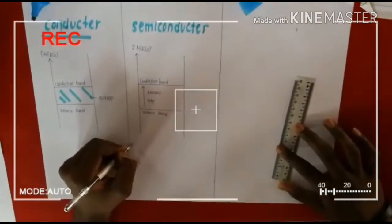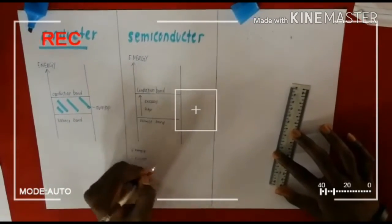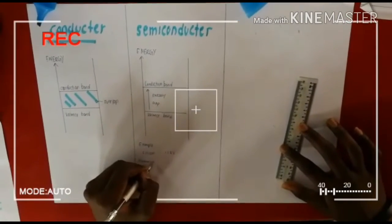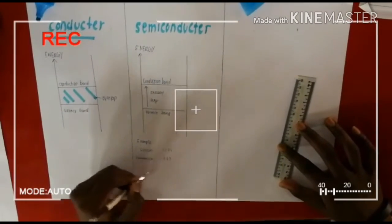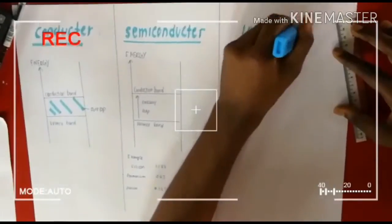The energy gap for these elements are 1.1 electron volts for silicon, 0.67 electron volts for germanium, and 1.4 electron volts for gallium arsenide. As the temperature increases, more electrons can be liberated from valence band to the conduction band and the conductivity also increases as well.